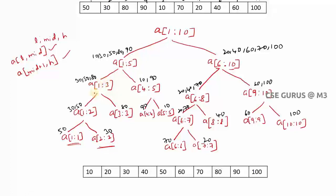You cannot divide further when only one element remains — a[1..1] is just one element, and that is a small problem. After dividing, you can see a[1..1] has the first element, which is 50, and a[2..2] is 30. Now you apply the merge method to just these two elements: 50 and 30 become 30 and 50 in sorted order.